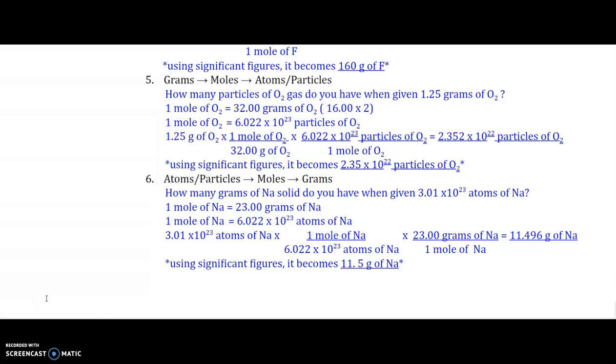Number six, now we're going from atoms or particles, which are molecules, to moles, to grams, another two-stepper. You're given 3.01 to the power of 23 atoms of sodium, and they want to know the grams. Write down things that you know. I know for every one mole of sodium, there are 23 grams of sodium from your periodic table. I also know for every one mole of sodium is equal to Avogadro's number of 6.022 to the power of 23 atoms of sodium. I'm going to take my original given of the 3.01 to the power of 23 atoms. I'm going to divide by Avogadro's number.